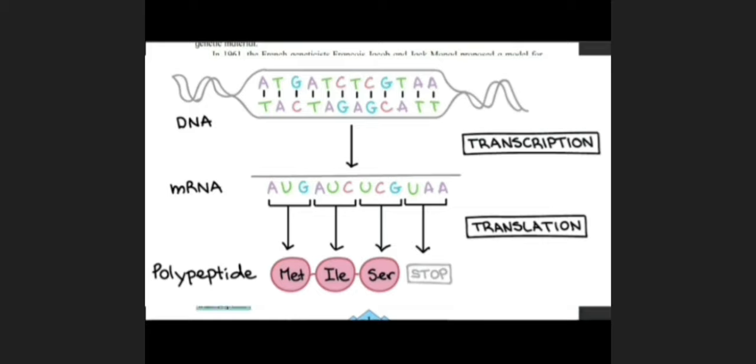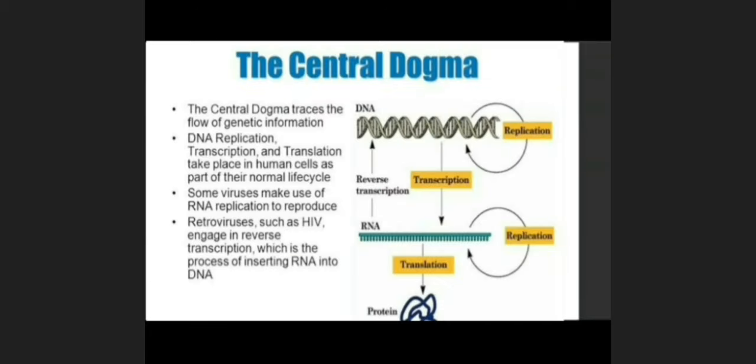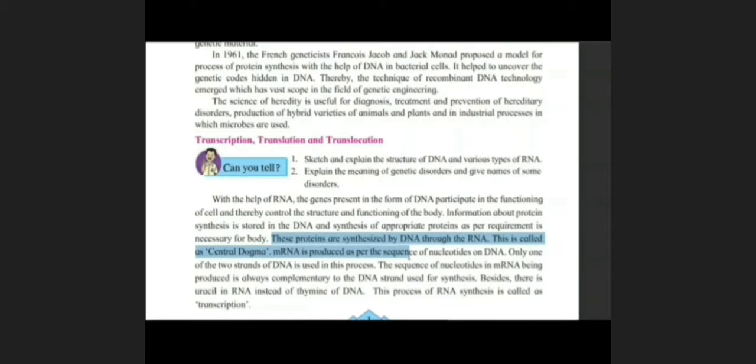Here in first paragraph, listen carefully. With the help of RNA, the genes present in form of DNA participate in the functioning of cells and thereby control the structure and functioning of the body. Information about protein synthesis is already stored in the DNA. Whatever information is required is already present in the DNA. So these proteins are synthesized by DNA through RNA, and this is called the central dogma. Overall, the protein synthesis process which is done by DNA through RNA is called the central dogma.